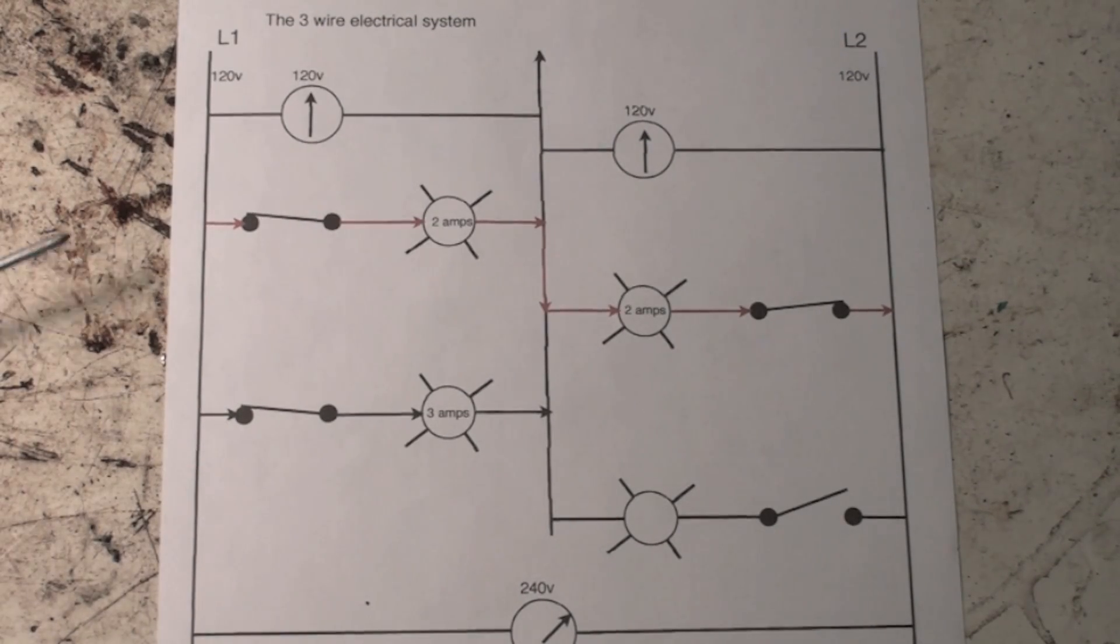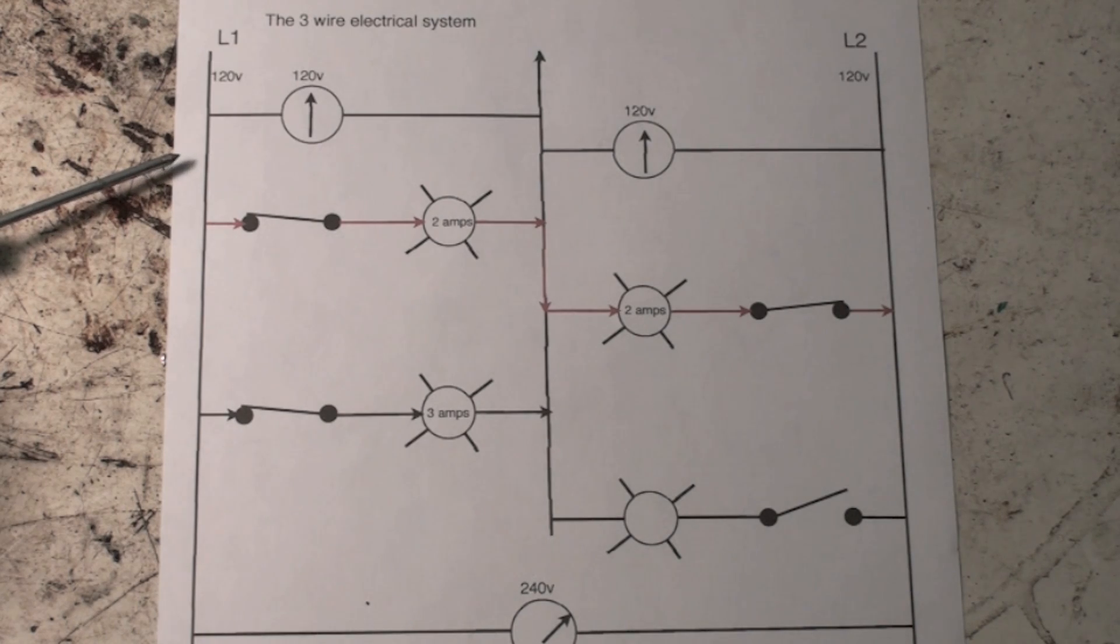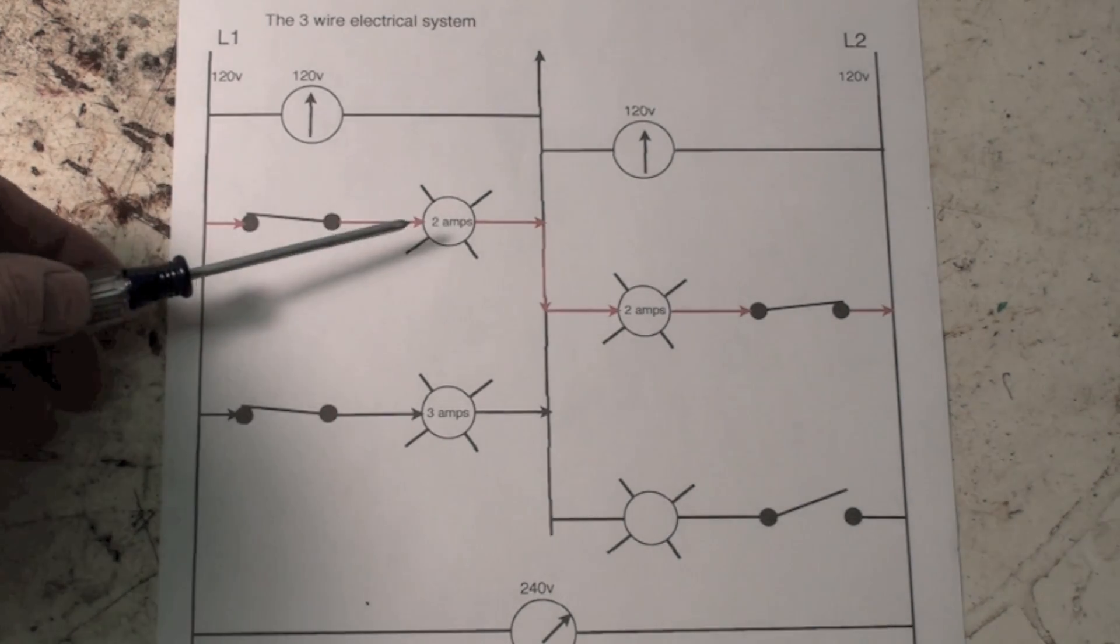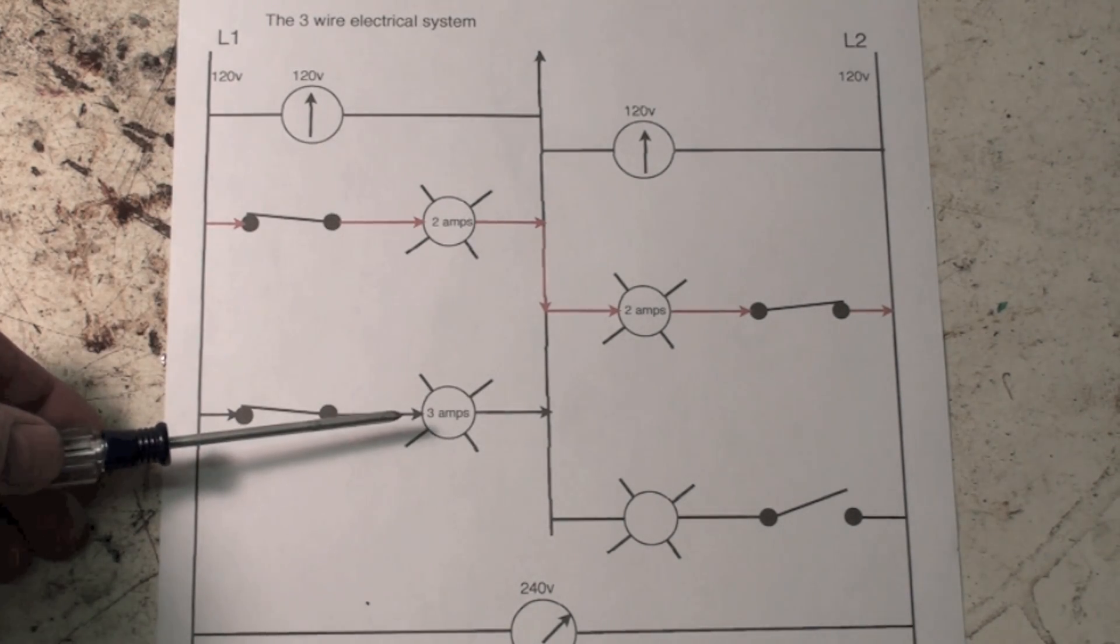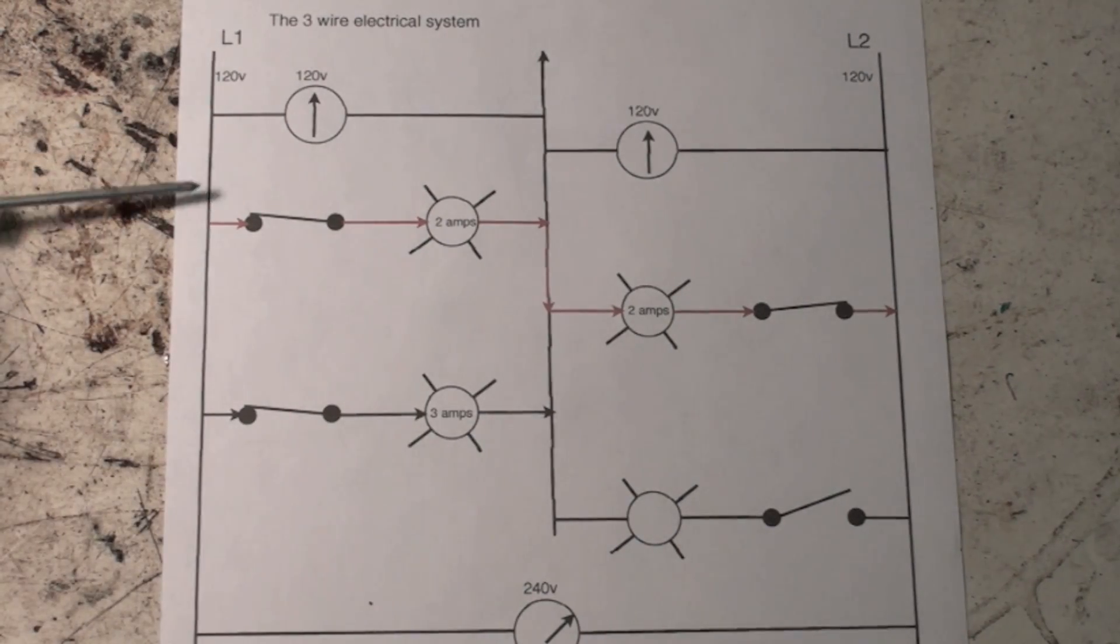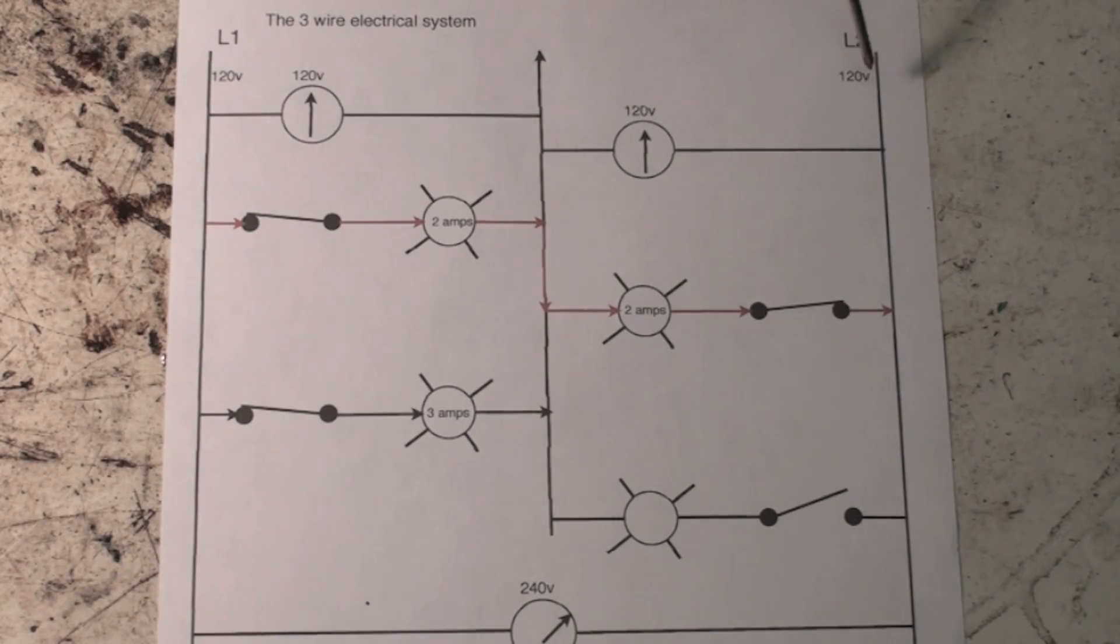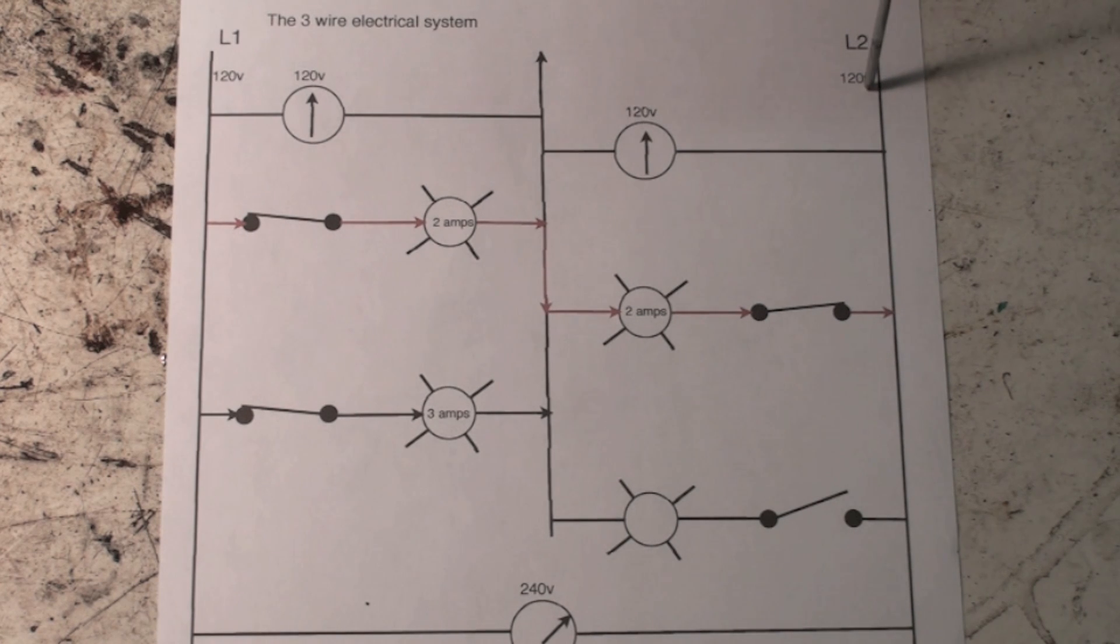I wanted to take a clamp meter and check the amperage draw of this line here. If I put my clamp meter around this wire here, it would read 2 amps plus 3 amps because that's what's going through this line—power coming through here, power coming through there. If I were to clamp this line right here, it would read 2 amps because there's only 2 amps going through this side.